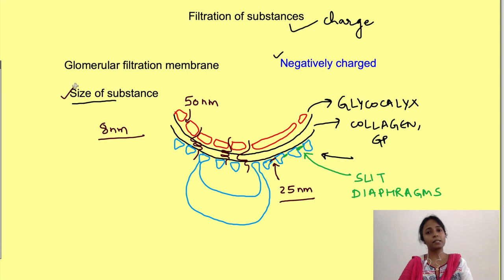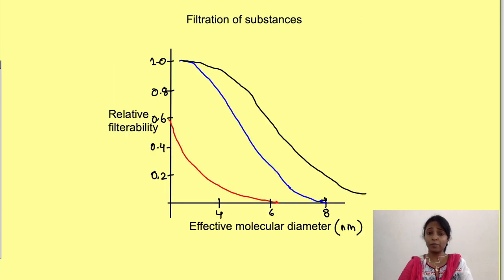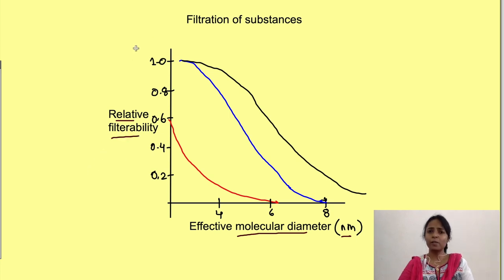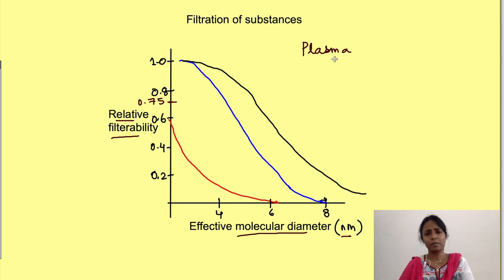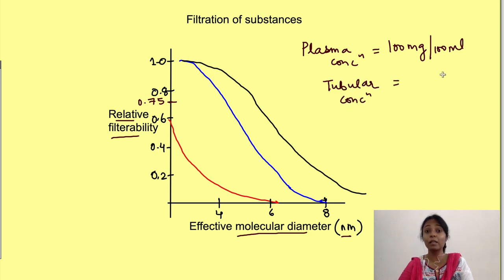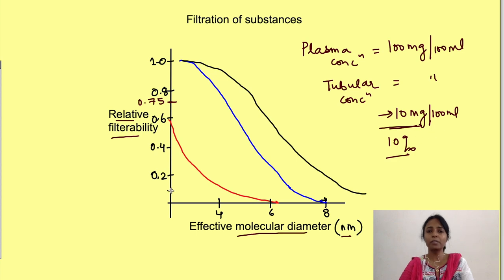Two key factors are size and charge of the substance. This can be understood using a graph where the x-axis shows the effective molecular diameter in nanometers and the y-axis shows relative filterability defined with respect to water. A value of 0.75 means 75% of the substance is filtered. For example, if a substance has a plasma concentration of 100 mg/100 mL and its tubular concentration is also 100 mg/100 mL, it is freely filtered; if tubular concentration is only 10 mg/100 mL, relative filterability is 0.1.